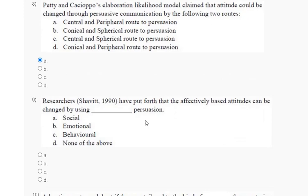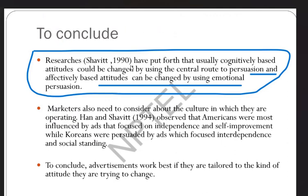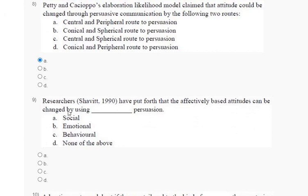Question number 9: researchers have put forth that the cognitively based attitude can be changed by using central route of persuasion, and affectively based attitude can be changed by emotional persuasion. So the correct answer for question number 9 is option number B.